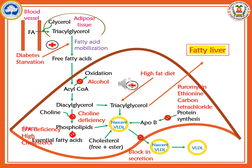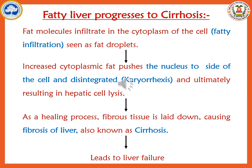All these various conditions lead to accumulation of fat in the liver, causing fatty liver. Another pathological feature of fatty liver is cirrhosis, which can further lead to liver failure. Fatty acid infiltrates the cytoplasm of hepatic cells, pushing the nucleus to the side of the cell where it gets disintegrated — a condition called karyorrhexis — and this can lead to lysis of hepatic cells. As a healing process, fibrous tissue is laid down causing fibrosis of the liver, which further leads to cirrhosis — an inflammatory condition — and ultimately liver failure.